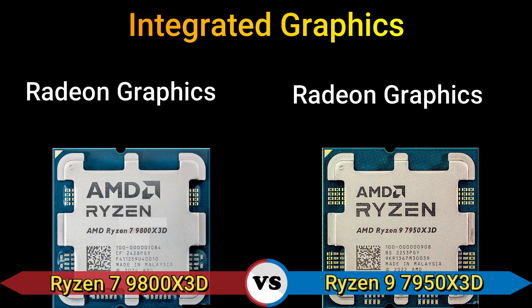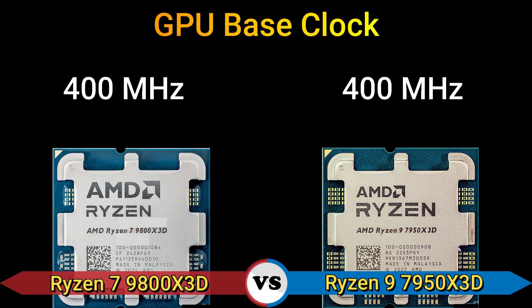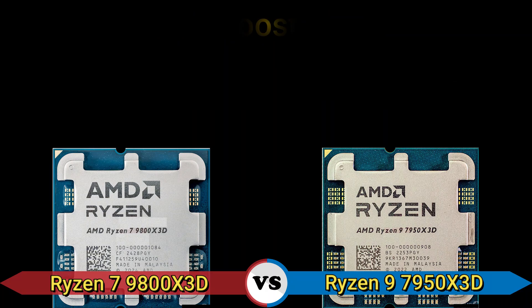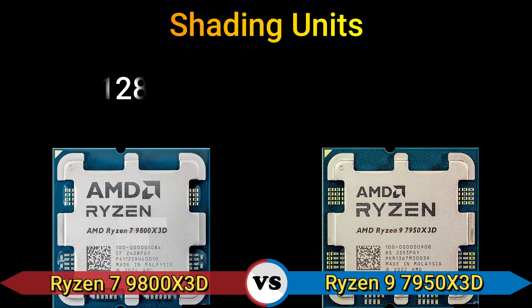Part 3 — iGPU: Integrated Radeon Graphics. GPU base clock: 400 MHz. GPU boost clock: 2200 MHz. Shading units: 128.